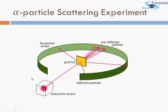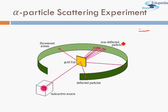So what he did was, he took Alpha Particles from a radioactive source, and these Alpha Particles were bombarded on a gold foil. This gold foil, shown here in yellow, was of very low thickness — even thinner than the paper of your notebook. He wanted as few atoms as possible present in that thin sheet of gold foil.